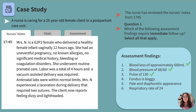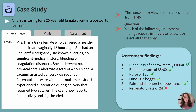Answer choice four — the fundus is boggy — suggests uterine atony, meaning the uterus has not contracted back down as it should after delivery, which can lead to postpartum hemorrhage. This is a super important indicator for nurses to recognize and respond to. Answer choice five — pale and diaphoretic appearance — indicates further suspicion of postpartum hemorrhage. The last option, a respiratory rate of 24, is an incorrect answer choice; this is a mildly elevated finding and would not indicate immediate follow-up.